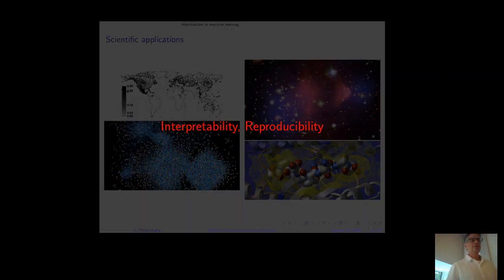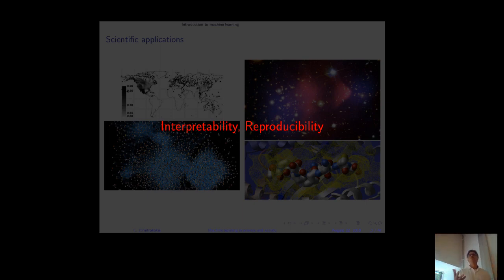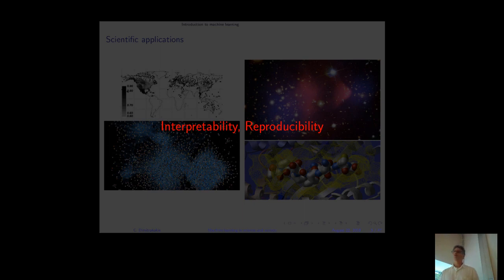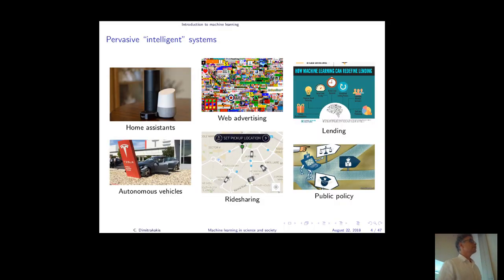There are two important things in scientific applications of statistics. The first is interpretability — if you build a complex model of a protein-DNA network, you have to be able to interpret what it means. The second is reproducibility — if you claim a result is true, somebody else should be able to do the same work, perhaps with different data, and get the same result.